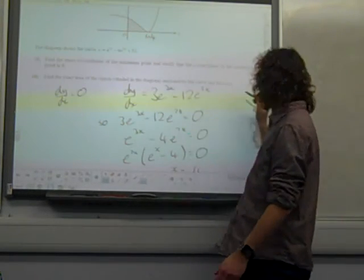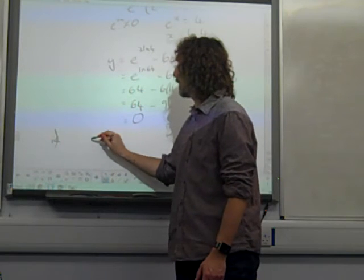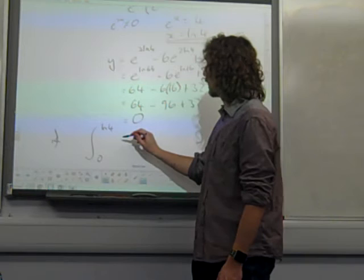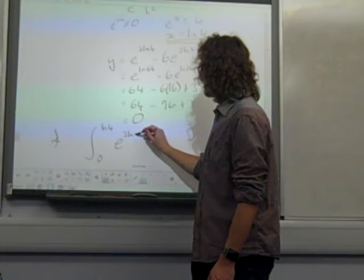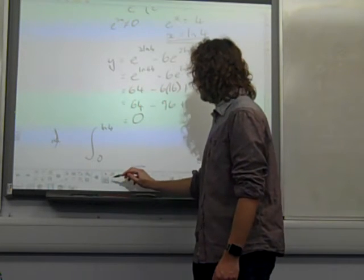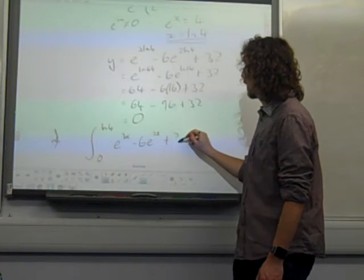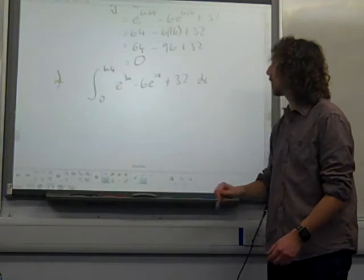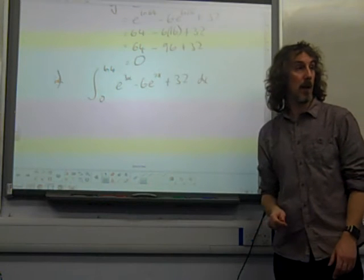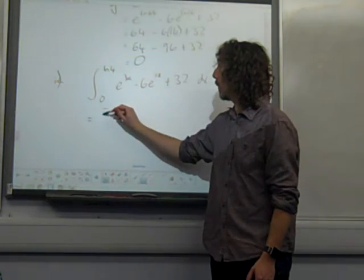So, we're doing the integral, the integral of part 2, is the integral from 0 to ln 4 of that expression, which was e^(3x) - 6e^(2x) + 32 dx. Now, remember, we conveniently got rid of the 32 in the first part, because we were differentiating. But, of course, we're integrating now, so the 32 would matter.